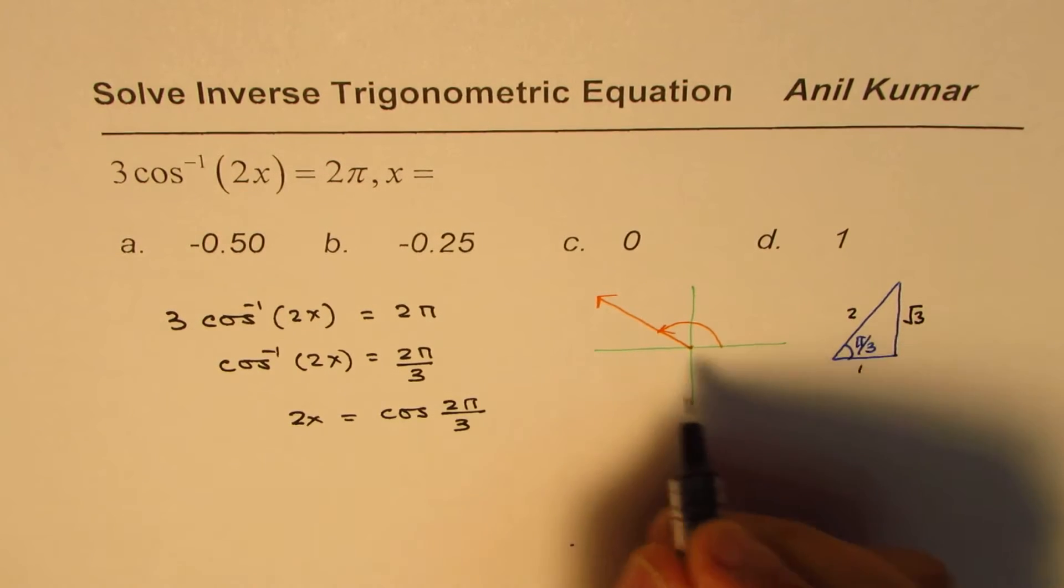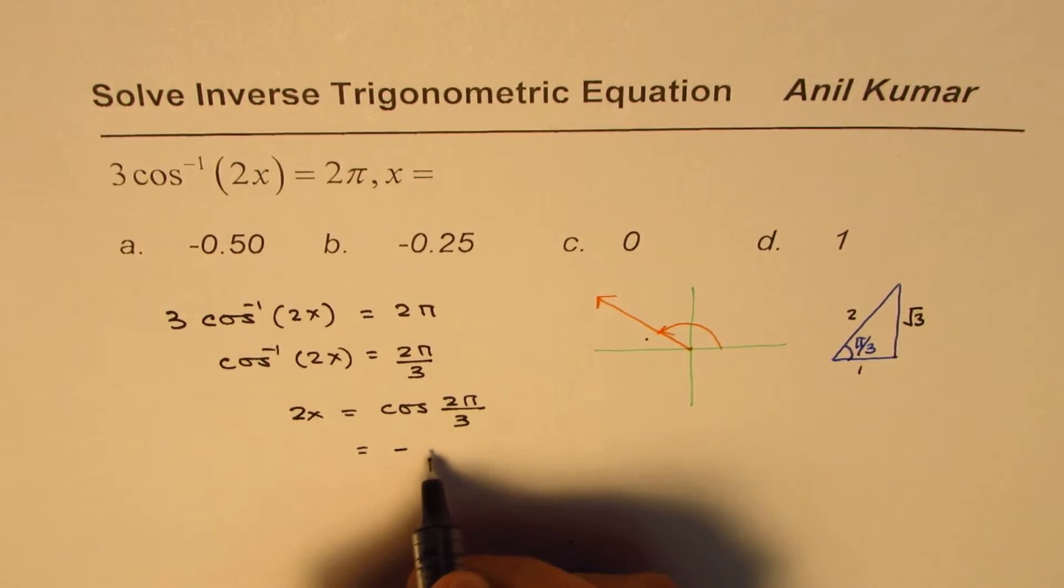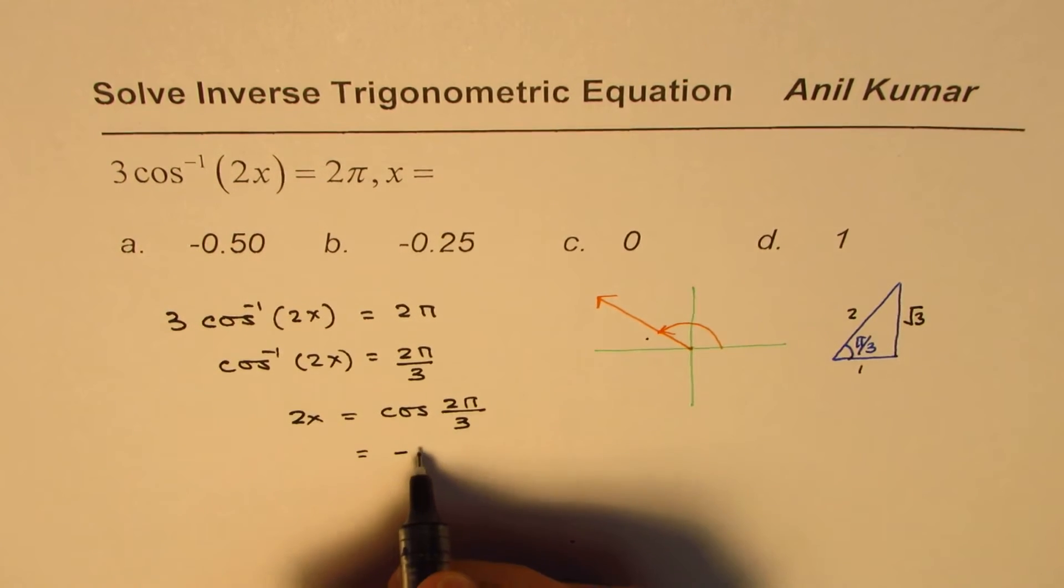Since we are in this quadrant, it is negative. So it equals negative 1 over 2, or negative half.